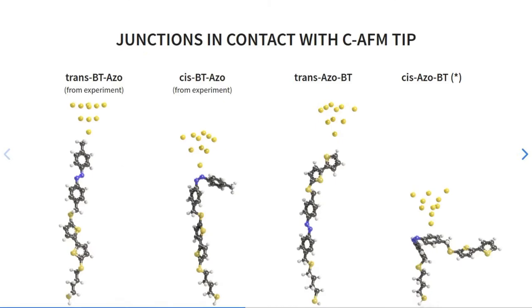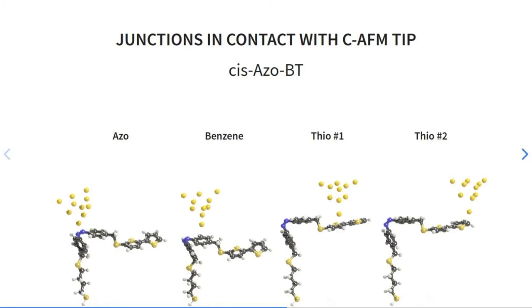As for the isolated molecules, for the system with tip we consider two isomers of each molecule, cis isomers and trans. Moreover, for cis isomers of designed molecule we distinguish four contact points. We call them Azo if the tip is contacting Azo group, Benzene if contacting Benzene ring, TO1 and TO2 for two rings of BTOFAN respectively. Our hypothesis is that depending on the tip position we might obtain different impact on the electronic properties of the molecules.